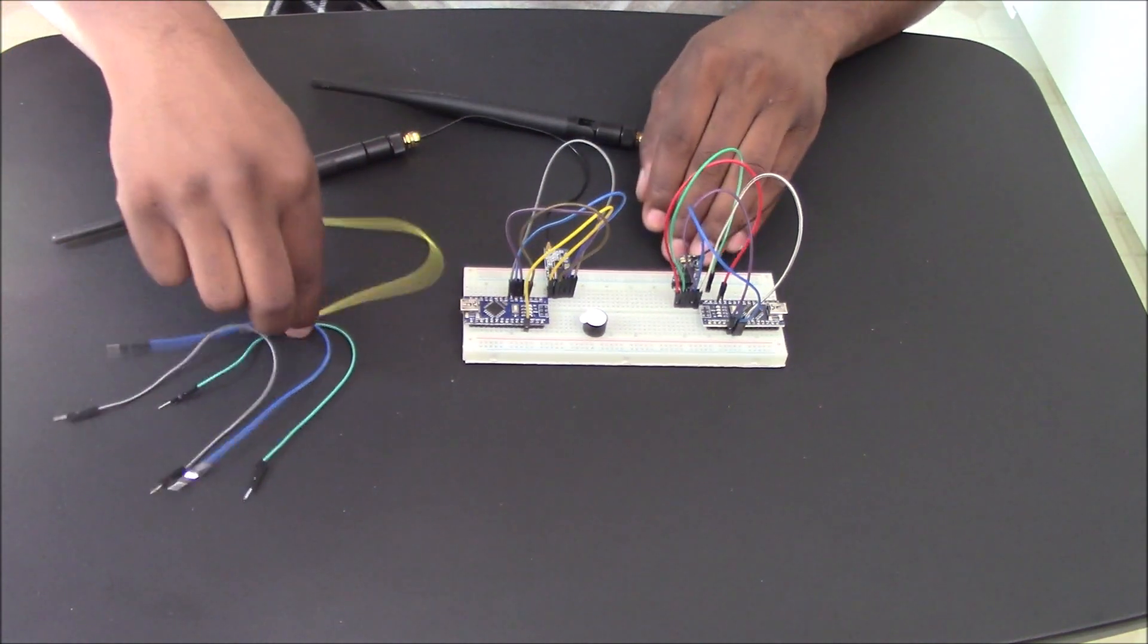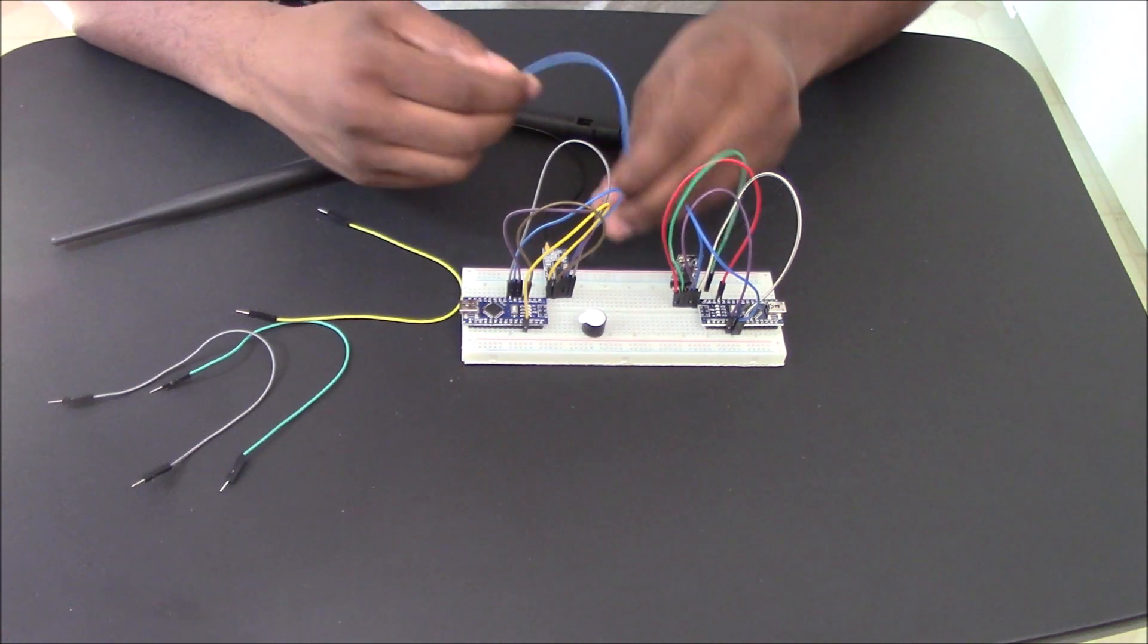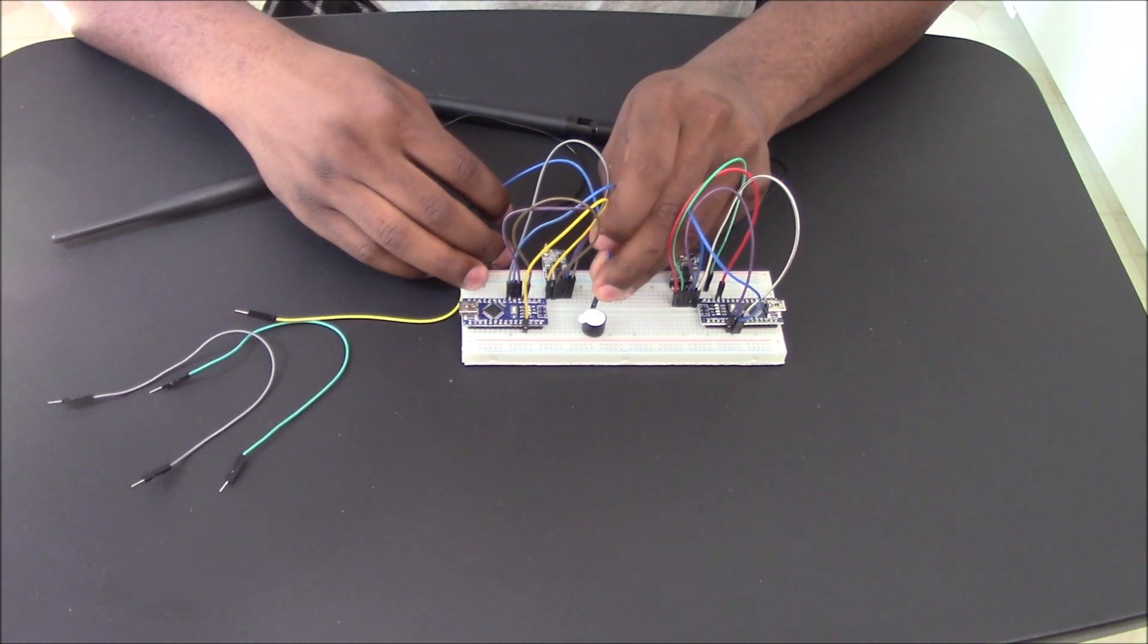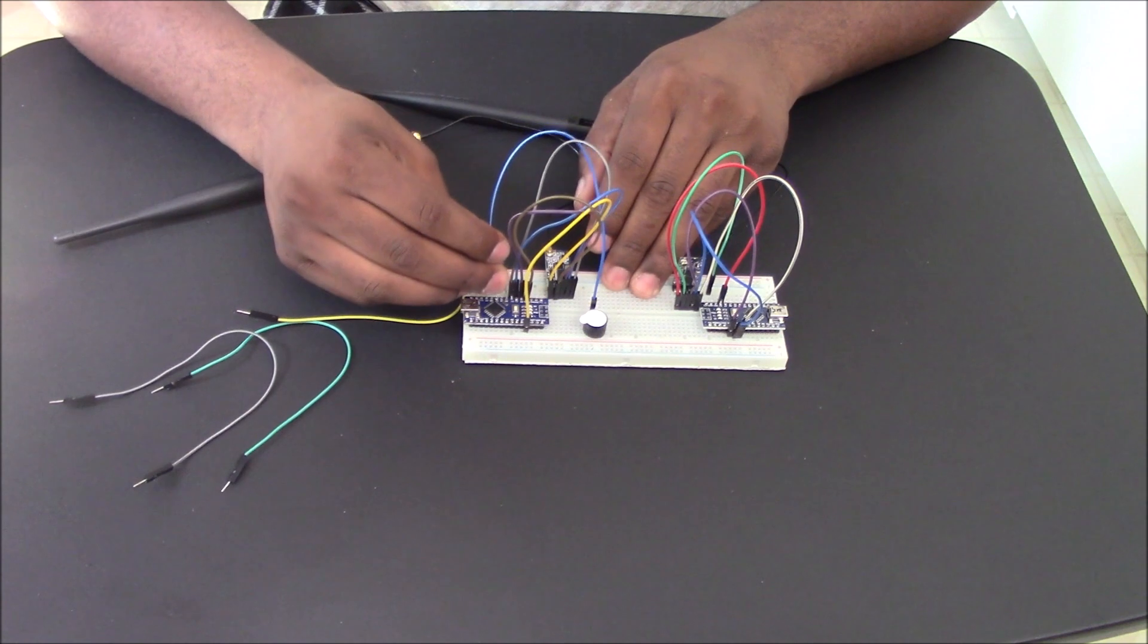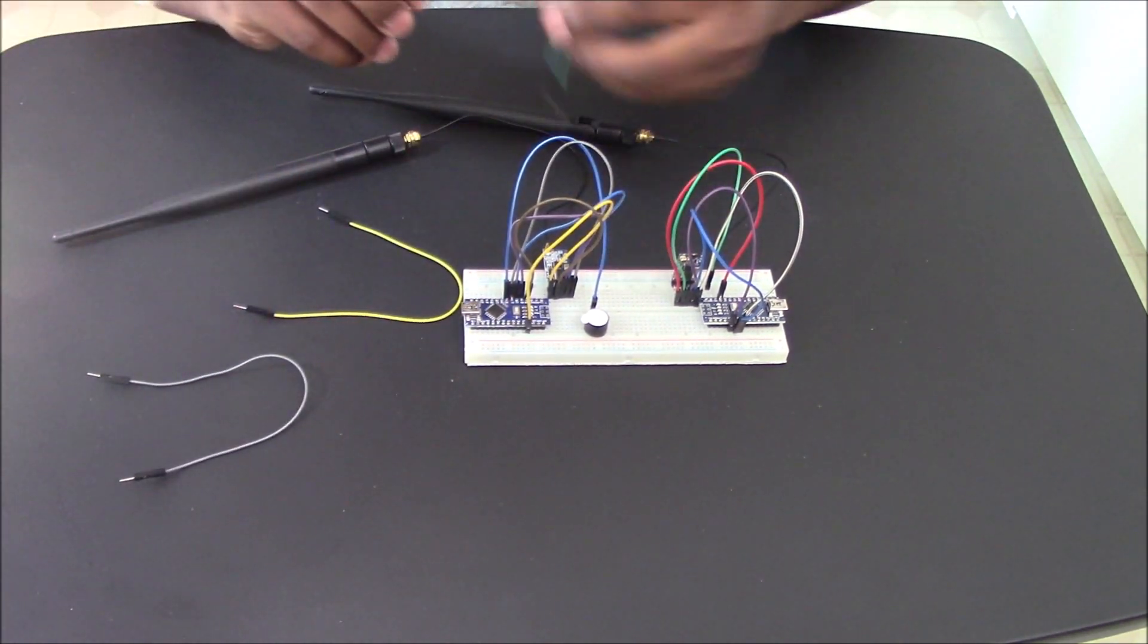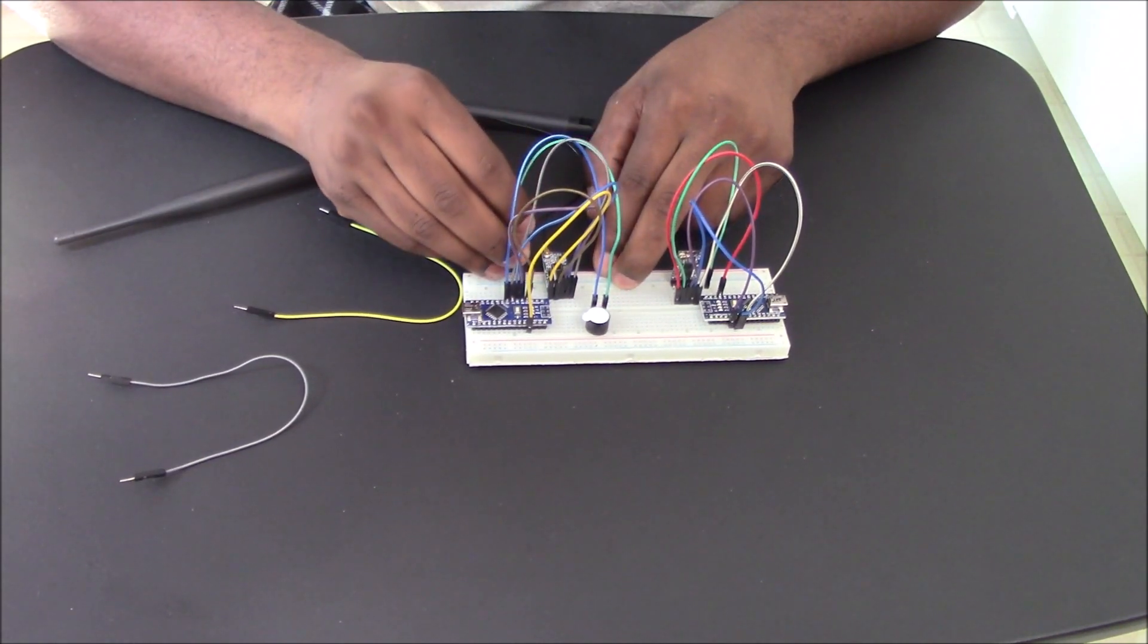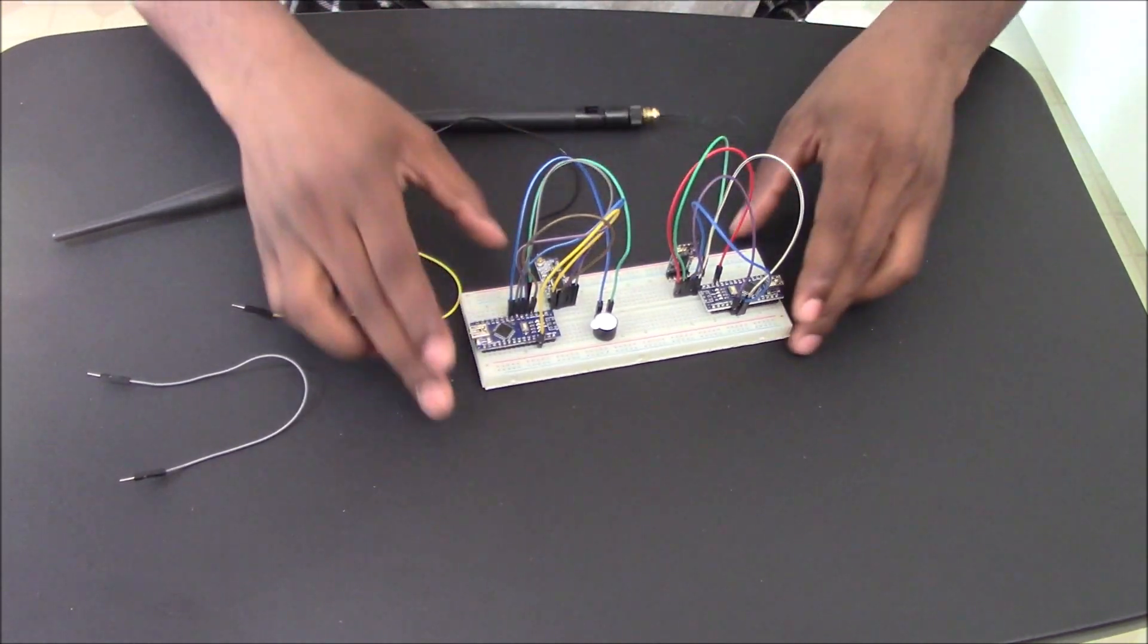And then connect your set pin to pin four. And then you want to connect the positive side of your buzzer to digital pin five. And then the ground of your buzzer, connect that to your ground.